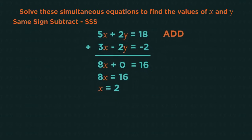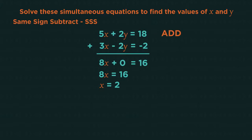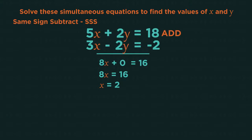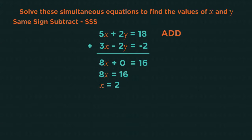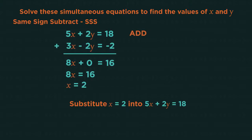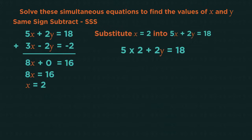Now we need to find the corresponding y value. Choose either one of the starting equations. So I'm going to choose the top one. Substitute x equals 2 into this equation. 5 multiplied by 2 add 2y equals 18. And solve the equation. 2y equals 8. Y equals 4.